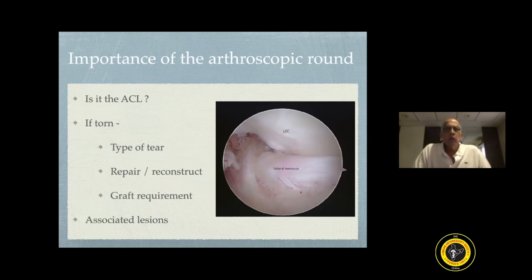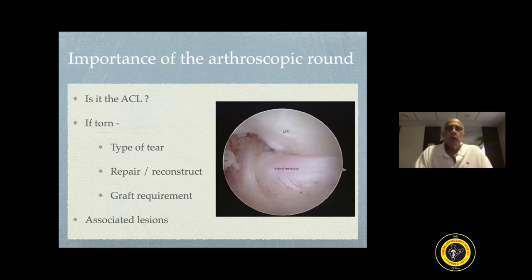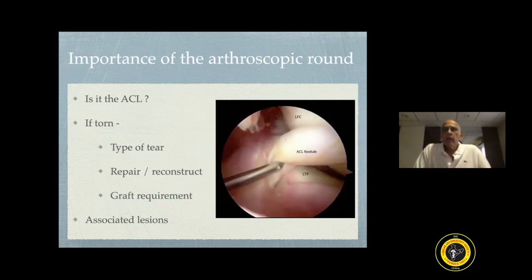The next information you can get from a diagnostic round is the type of tear. The ACL can be a mid-substance rupture, it could be a femoral side detachment, or it could be a nodule of the ACL. You would then know whether this ACL is repairable or you need to reconstruct it, and the type of graft required depending on the remnant of the ACL tissue. At this point, you should also assess the associated lesions, as almost 14-15% of patients have associated lesions like a ramp lesion or a lesion on the lateral compartment of the knee.